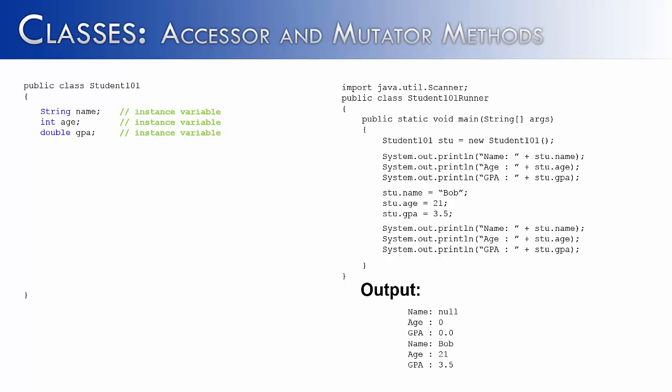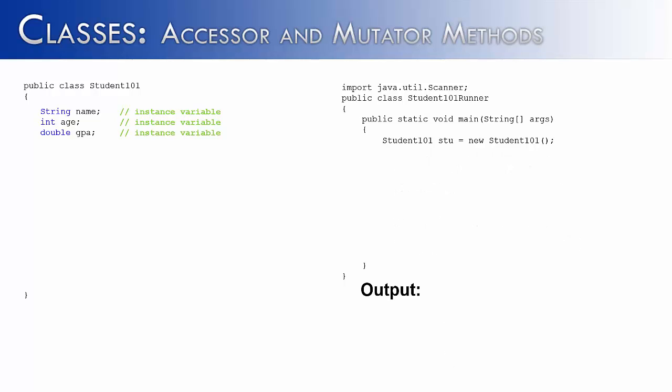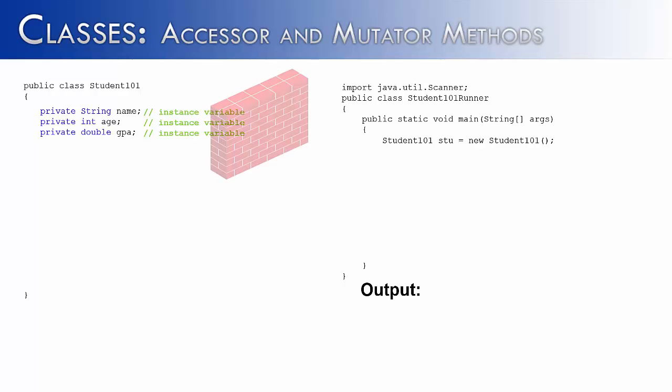So can we access name, age, and GPA directly? Under these circumstances, yes. But I want to tell you why you don't see this very often. It's because you're not supposed to be able to access instance variables like this. Let's explain how to take these three instance variables off limits. We do that by adding the keyword private in front of them. So it's private string name, private int age, and private double GPA.